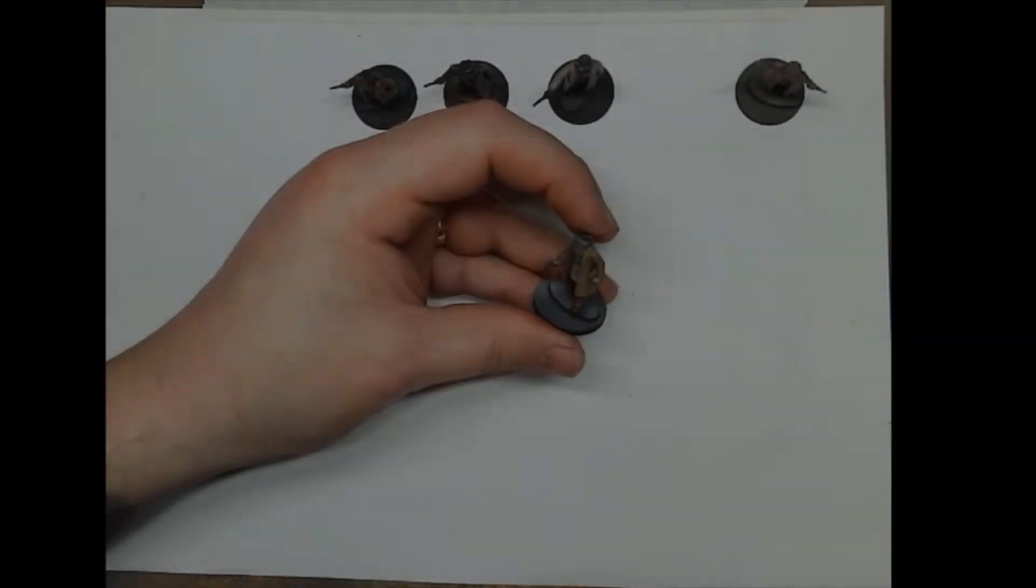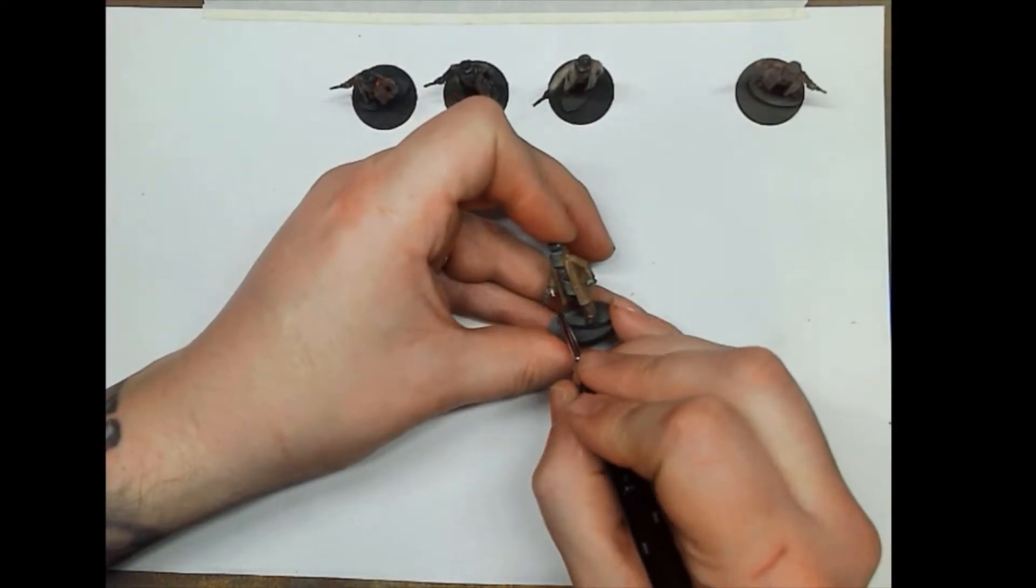Kislev Flesh. Obviously there's not a huge amount of flesh on these guys, just a few hands as you can't see any of their faces.